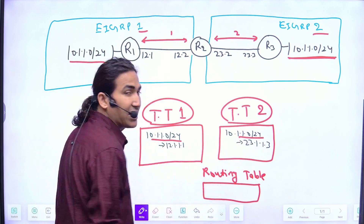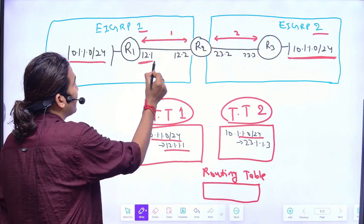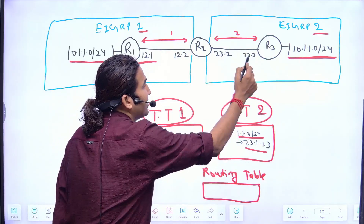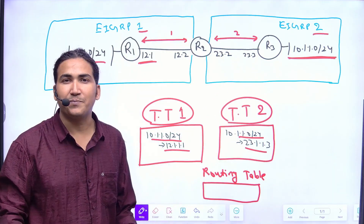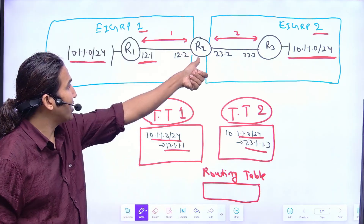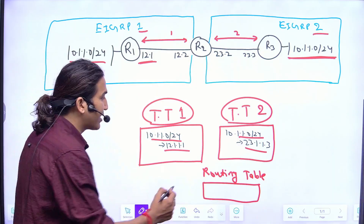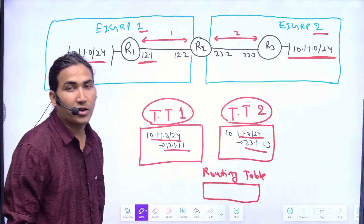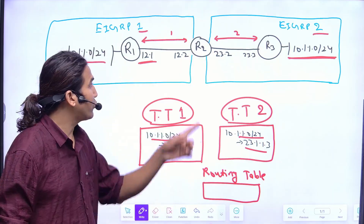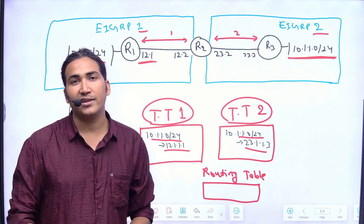In both topology tables we have the same IPv4 network subnet 10.1.1.0/24. However, the next hop in topology table 1 is 12.1.1.1, which is R1's IP address, and the next hop in topology table 2 is 23.1.1.3, which is R3's IP address. The question is: which path will R2 install in its routing table?